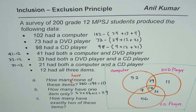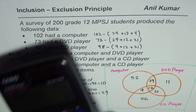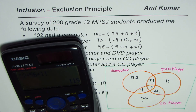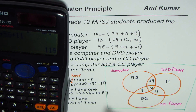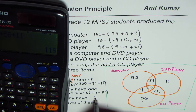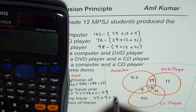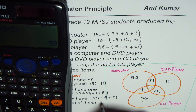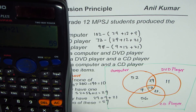The last question is: how many have exactly two of these items? We combine the regions representing exactly two items: 29 plus 9 plus 21, which gives us 59. So 59 students have exactly two of these items.